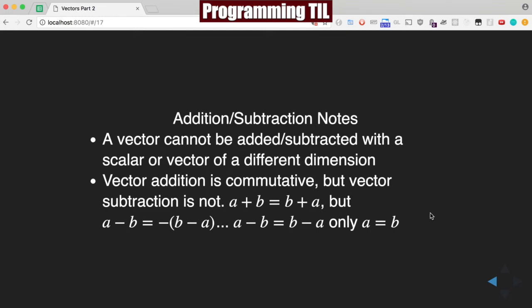Finally, a vector cannot be added or subtracted to a scalar or vector of a different dimension. Addition is commutative, so a + b = b + a.